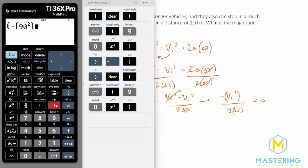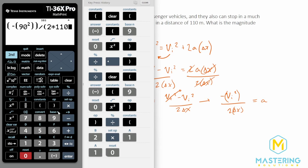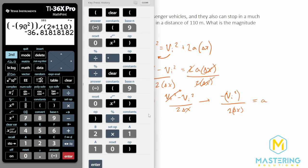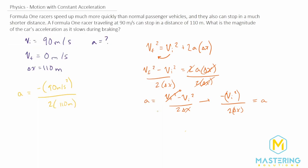And now we'll be dividing all of that by two times the distance, which was 110 meters. So we have an acceleration or a deceleration of negative 36.8. So we will round that to negative 37 meters per second squared for the deceleration of the Formula One car as it stops.